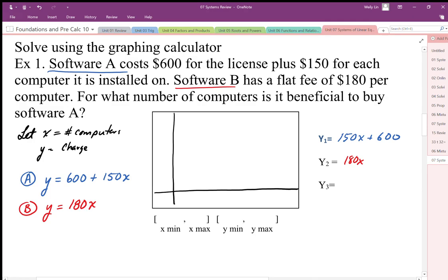I'm going to graph this with x from negative 10 to 40 and y from negative 1000 to 5000. You may need to adjust this window, but I already have an idea of how many computers and how much money we're talking about, so I figured this out beforehand.